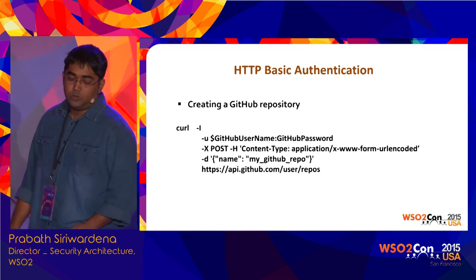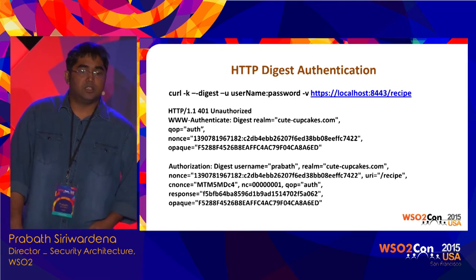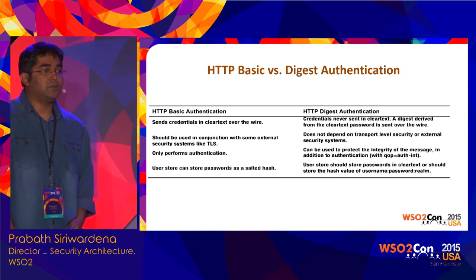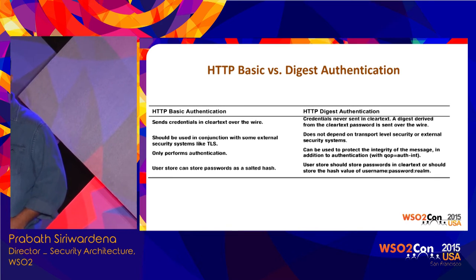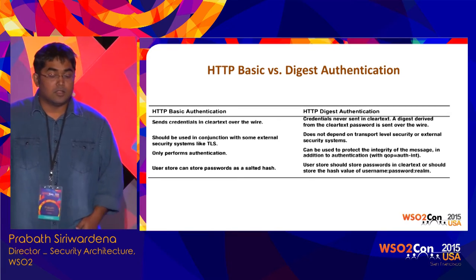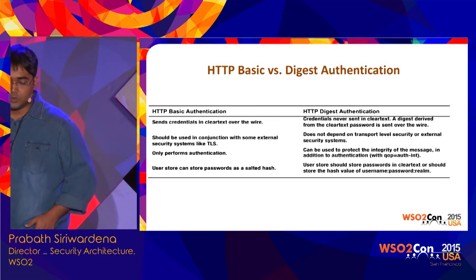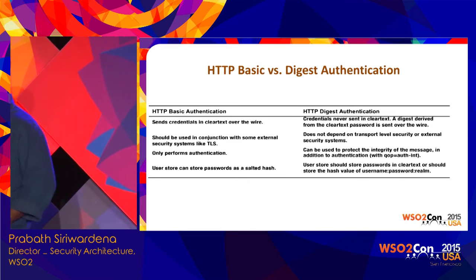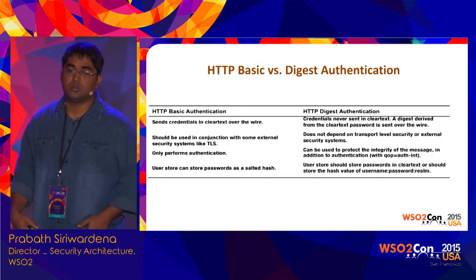The alternative to basic auth is digest authentication. The difference between basic auth and digest is: in basic auth, you are basically sending your password over the wire, so it has to be secured with transport-level security — basic auth must be over TLS. With digest auth, you never put your credentials on the wire. You use a signature mechanism based on a hashing algorithm, and you only send the hash or digest over the wire.